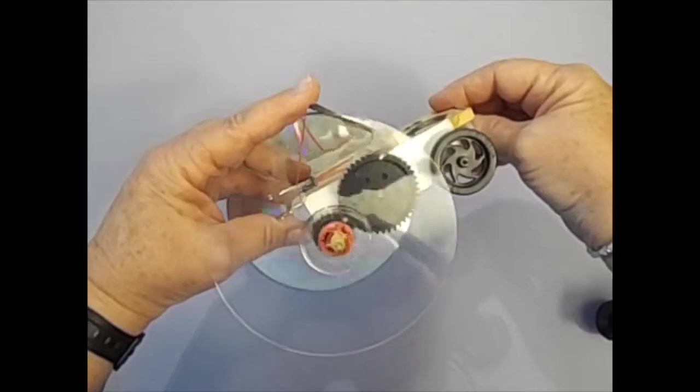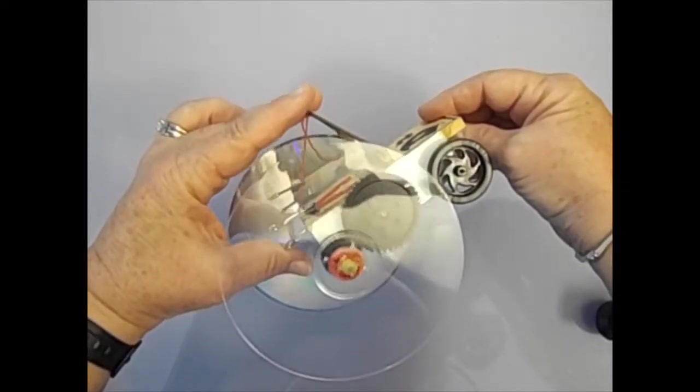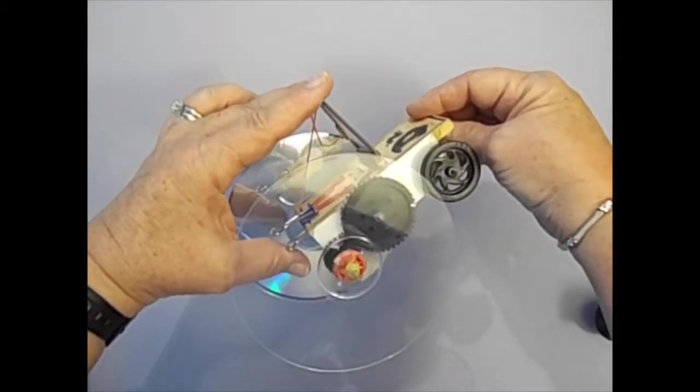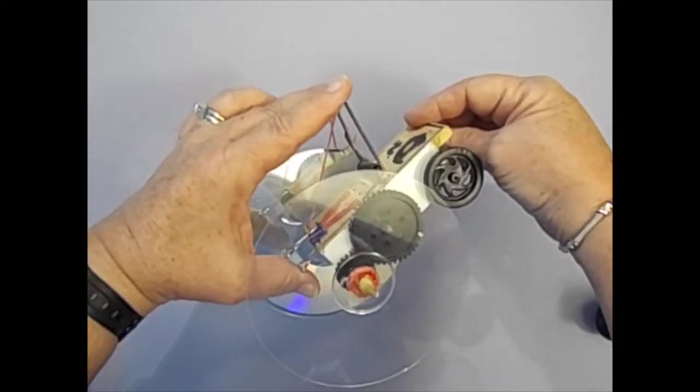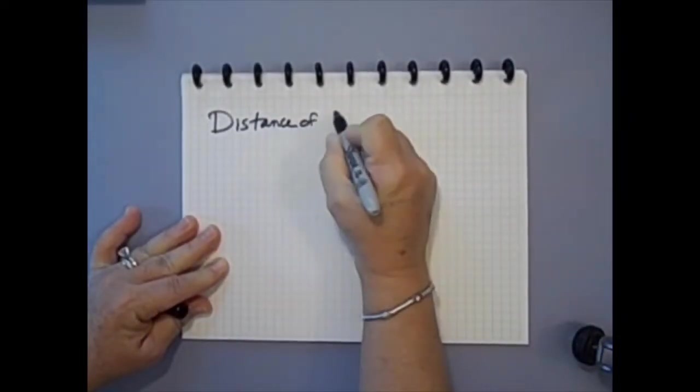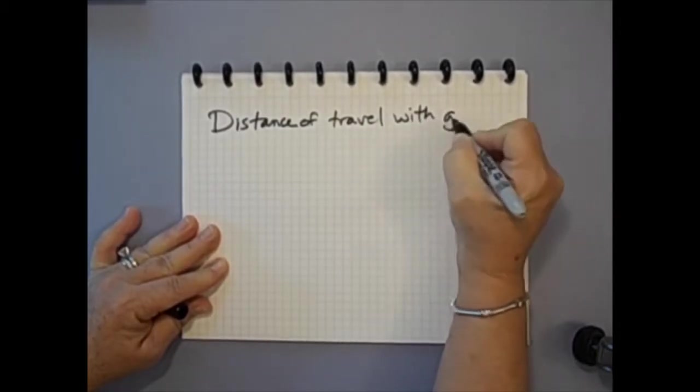Consider this. With the string being wrapped around the 40 tooth input gear axle, each string wrap produces one turn of this axle and two turns of the axle with the 20 tooth output gear and CD wheels, which results in twice as much distance compared to no gear at all. Remember, 10 turns of the CD wheel results in a distance of 377 centimeters.